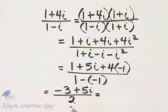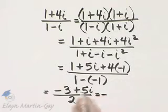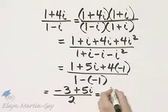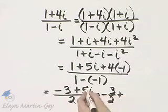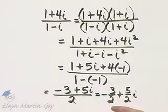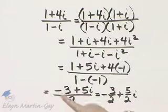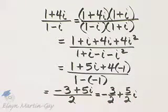If you'd like, you can leave it like that. Check with your instructor. Or he or she may want it written as negative 3 over 2 plus 5 over 2I. That's actually in the form A plus BI. So that's negative 3 over 2 plus 5 over 2I.